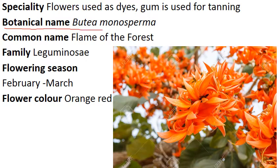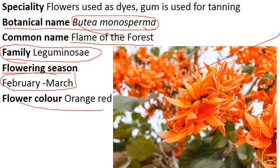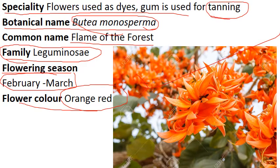Now comes to Butea monosperma, also called Flame of Forest. Family is Leguminosae — the same Pea family. Flowering season is February to March, also in summer season. Flower color is orange-red, as you can see. If you are going into a forest, these flowers are very attractive. Special character: flowers are used as dye, and the plant produces gum and is used for tanning, which is generally used in the leather industry. The orange-red color makes it easy to form dye, and you should find gum inside that flower.